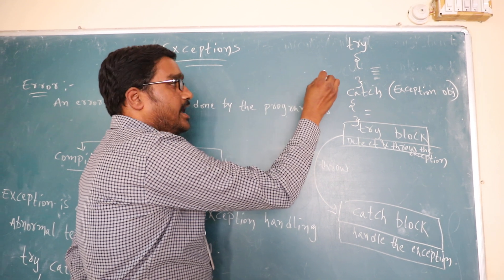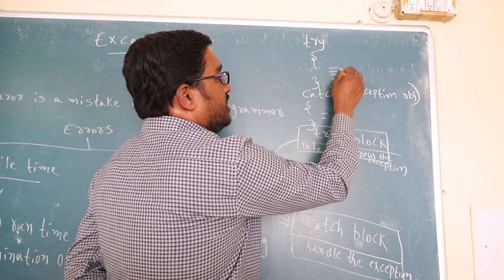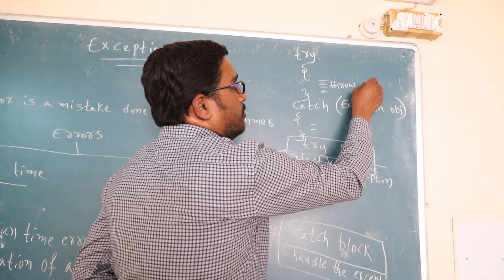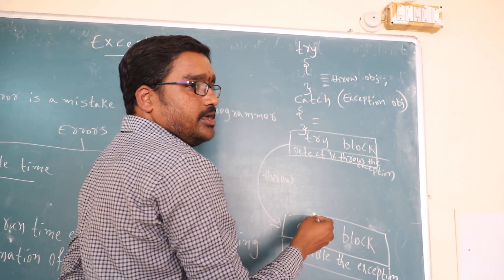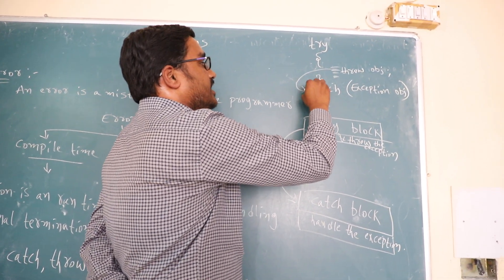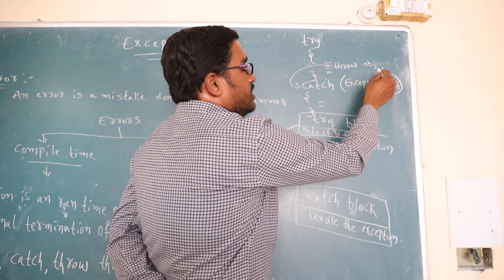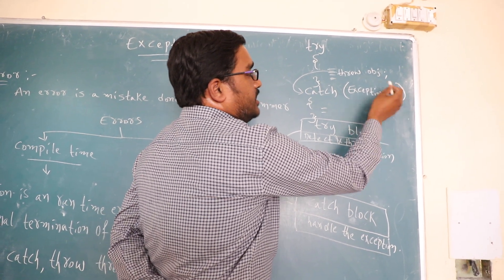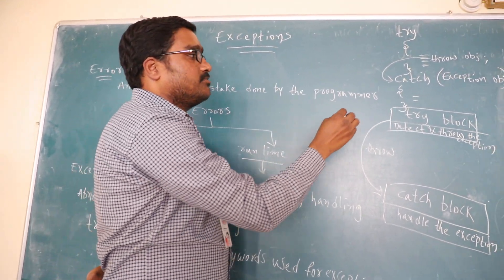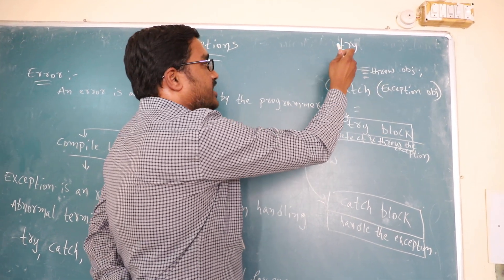And when there is a chance of getting the exception, that line must be followed with a throw keyword. Throw some object or throw with some variable. Next, whatever the object which is thrown from the try block, that will be caught by the catch block. And the object which is thrown by the throw statement must be similar to that of the object which is handled by the catch block. And try and catch blocks must be followed one after the other. A catch block must be always written next to the try block. Like this, we can handle the exception.